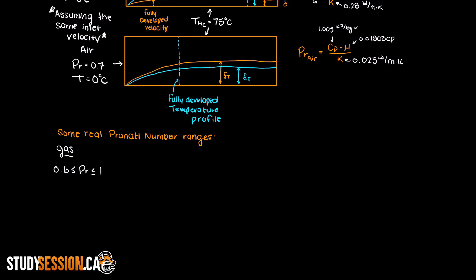On the other end of the spectrum, highly viscous liquids have a higher Prandtl number, like the glycerin we talked about earlier, and some oils even have Prandtl numbers nearing 100,000.